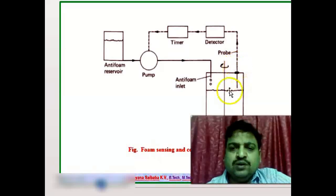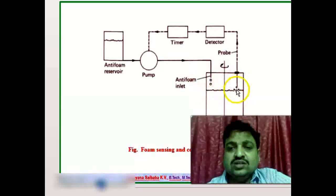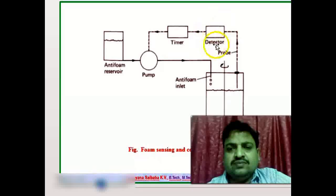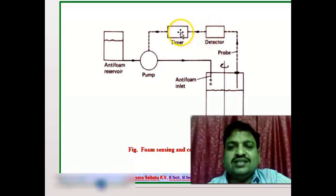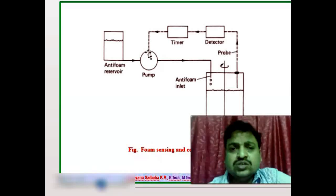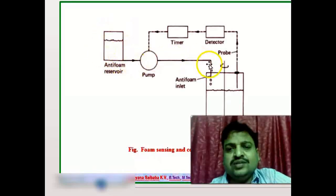When the foam touches the probe, it acts as an electrolyte and completes the electrical circuit with the vessel acting as earth. The resulting current signal is detected by the controller, which immediately activates the timer and the final control element — a valve or pump. The pump then delivers anti-foaming agents from the reservoir into the fermentation process.